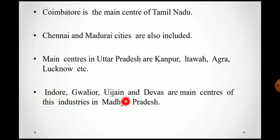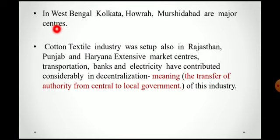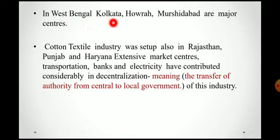Indore, Gwalior, Ujjain and Devas are the main centres of cotton textile industry in Madhya Pradesh state. In West Bengal, Kolkata, Havra and Murshidabad are the major centres of cotton textile industries in the state.